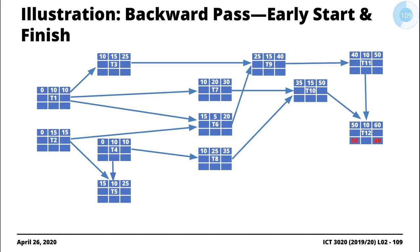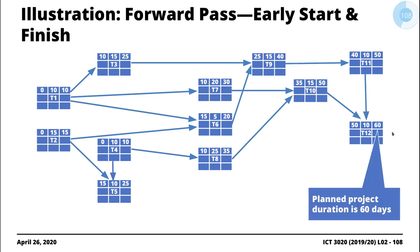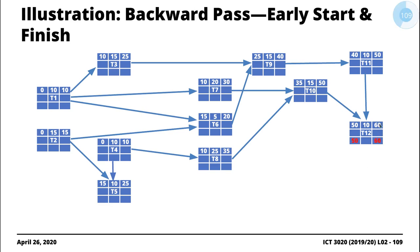For the backward pass, we do the opposite — we start with the last task. For the last task T12, the late finish equals the early finish, which is 60. We subtract the duration to get the late start: 60 minus 10 gives 50. Working backwards, T11 pulls the late start of T12 as its late finish, which is 50; subtract 10 to get late start of 40.